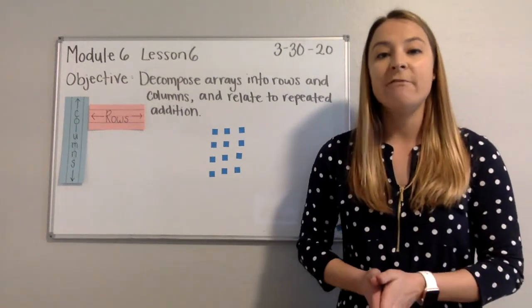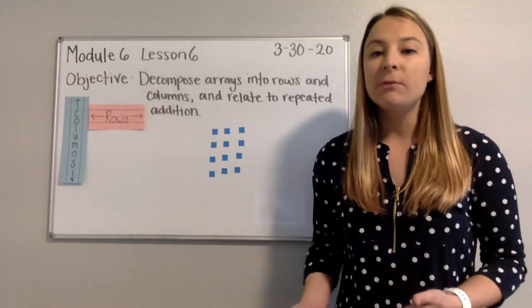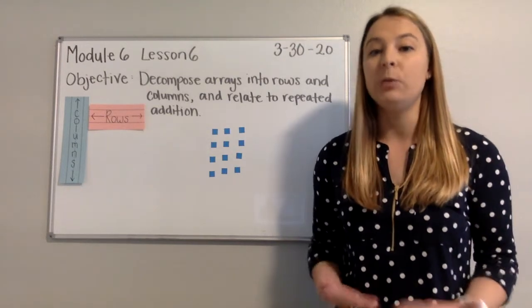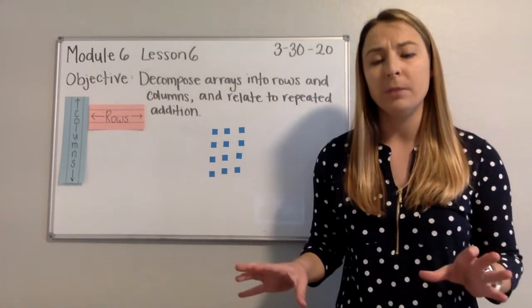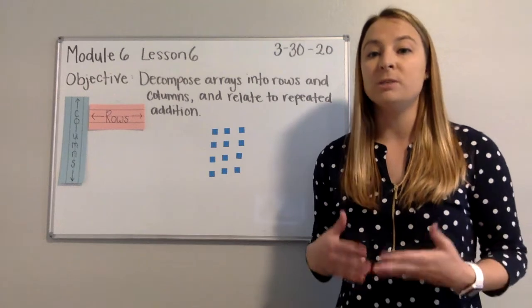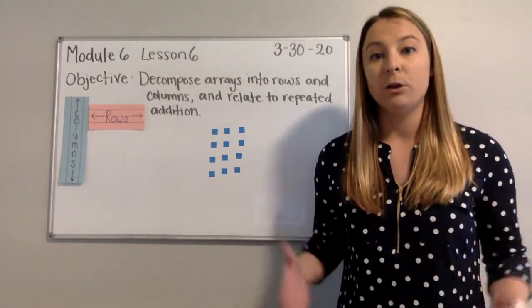Here I have my array. I have my four rows of three. Now this is different from what we started earlier in module six when we were creating equal groups because our groups are kind of spaced out all over the place. When we're doing our arrays, we're putting them into an arrangement of rows and columns so that they're in order and they make a nice rectangular array.